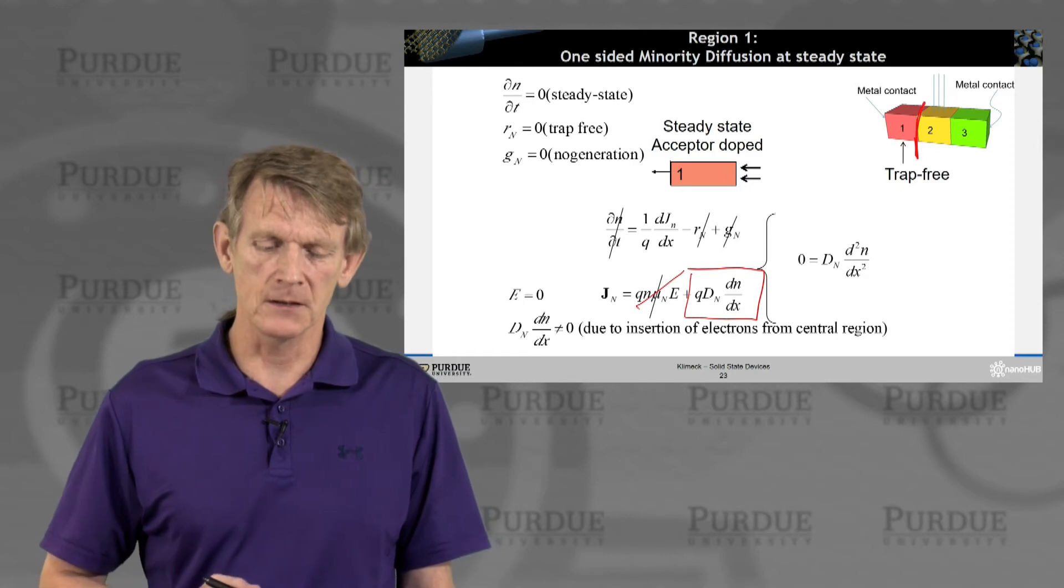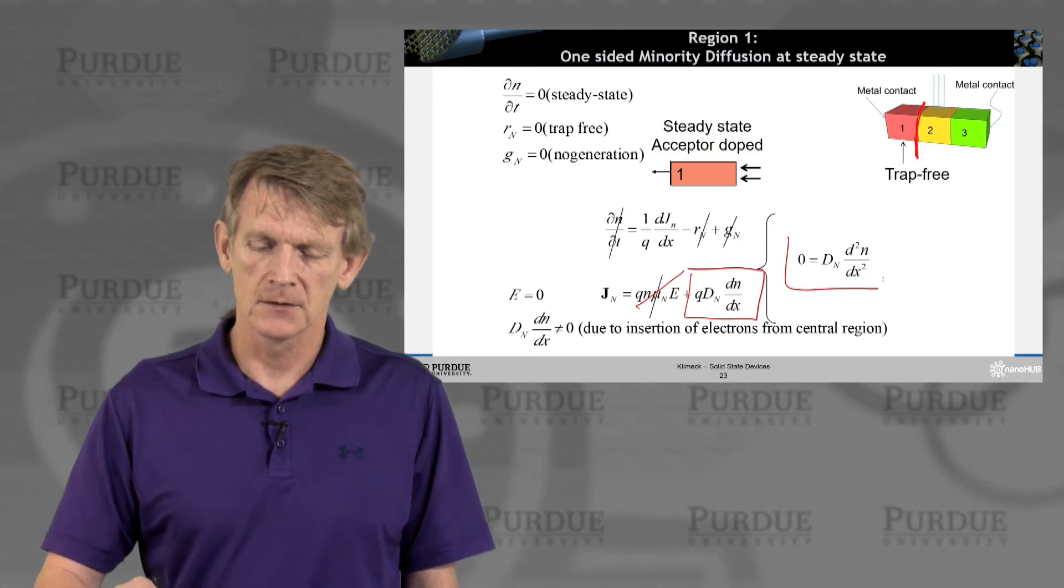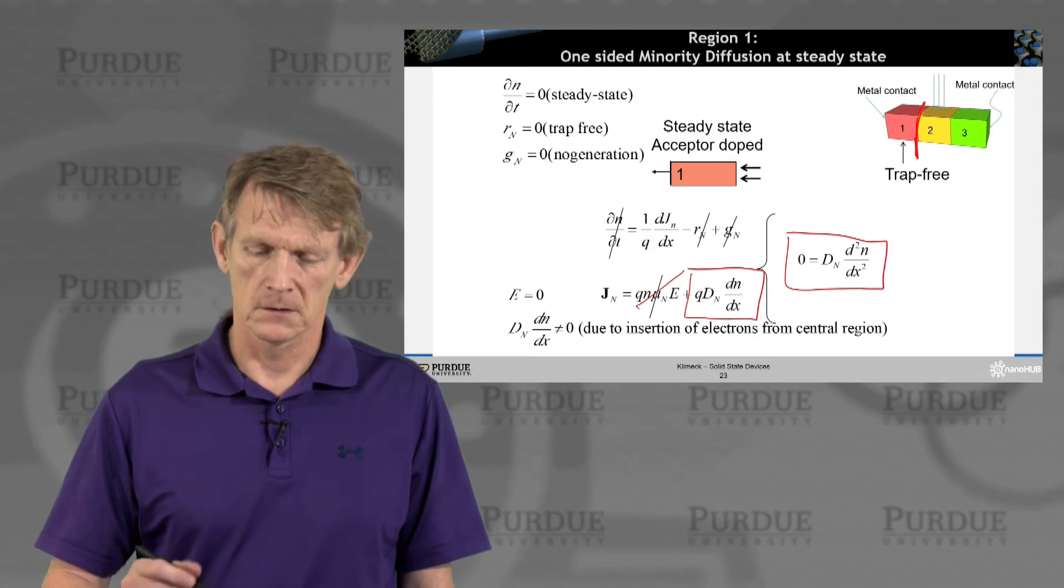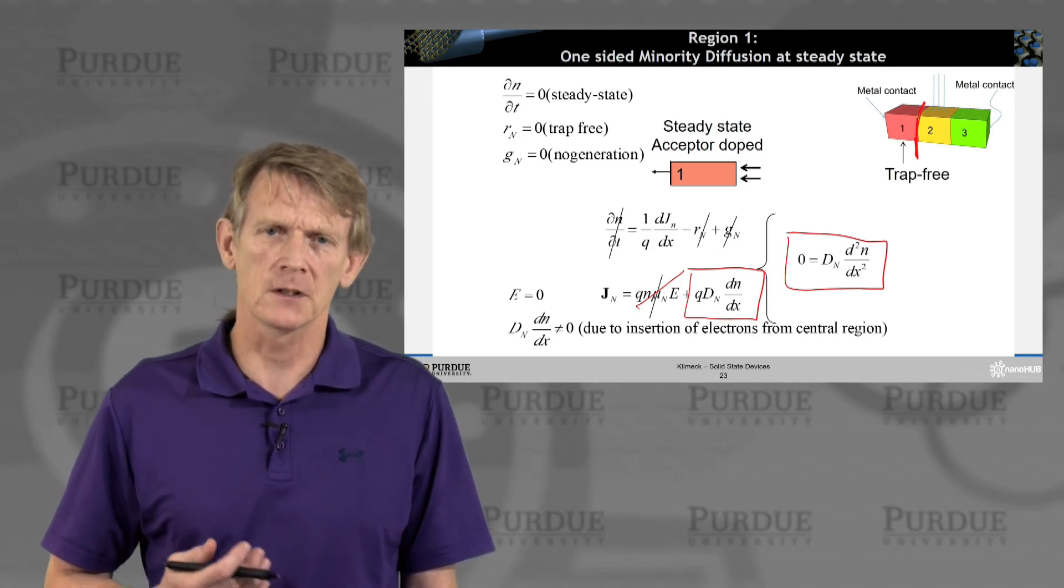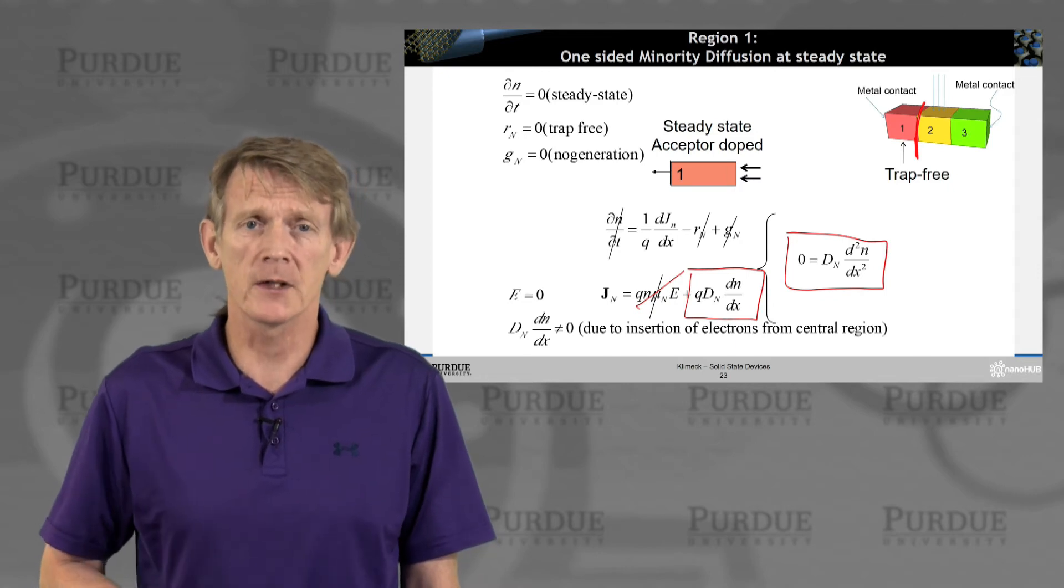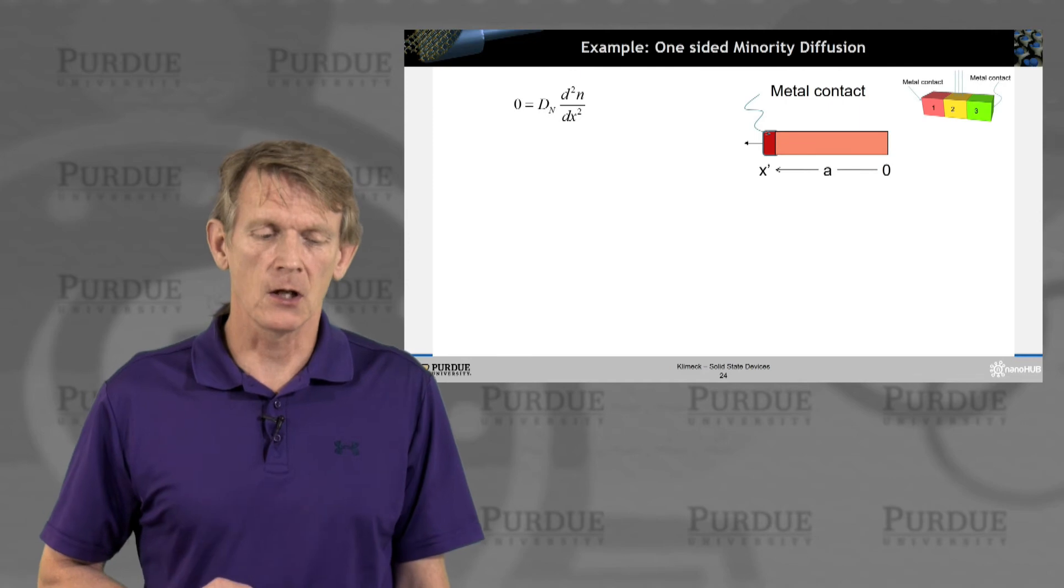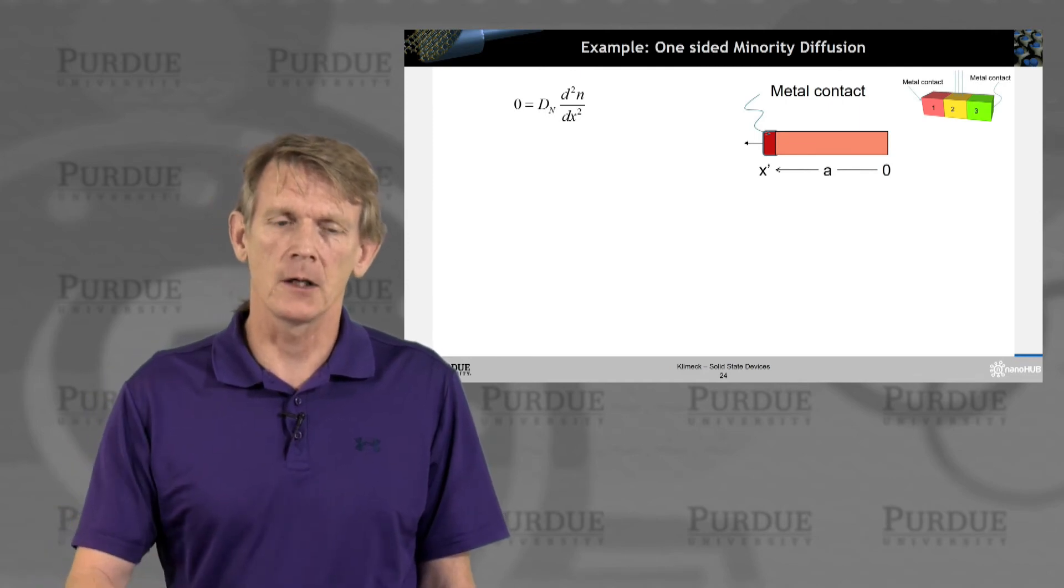So that will give us a boundary condition. And these two expressions combined say that the second differential d²n/dx² must be zero. We're just combining these two expressions. Now we have a differential equation for this region one. We will solve it in general and then apply a boundary condition.